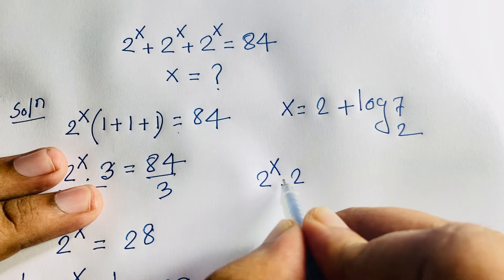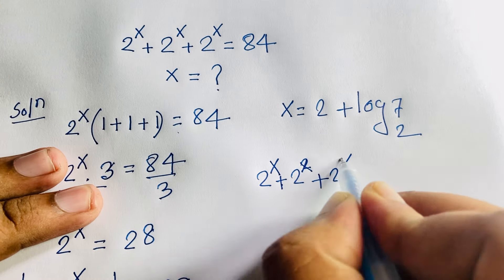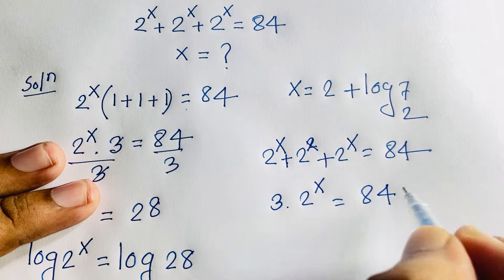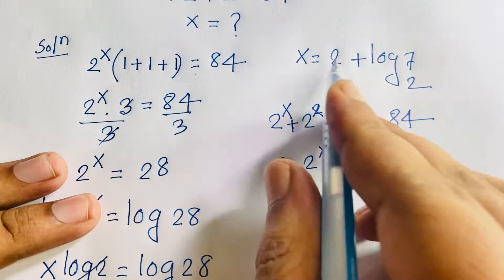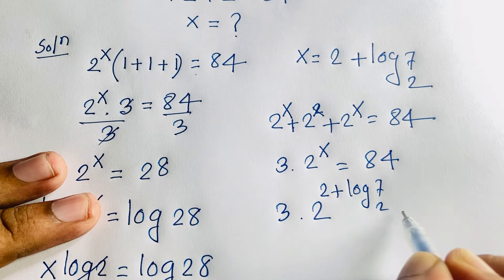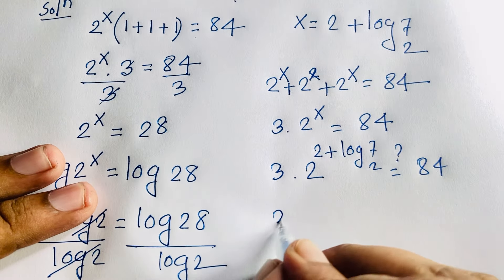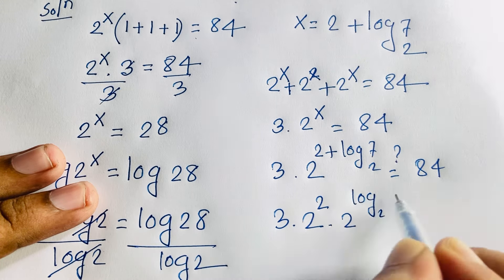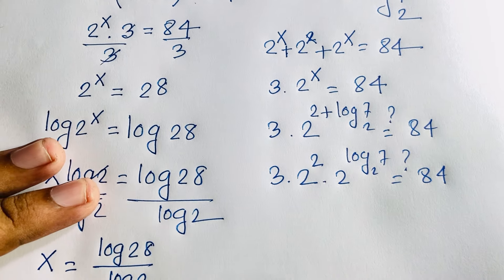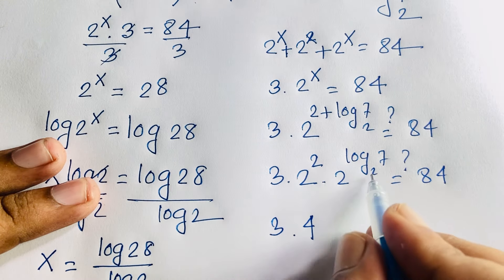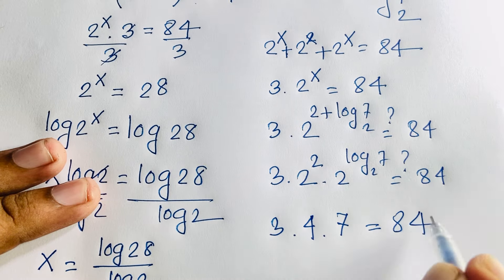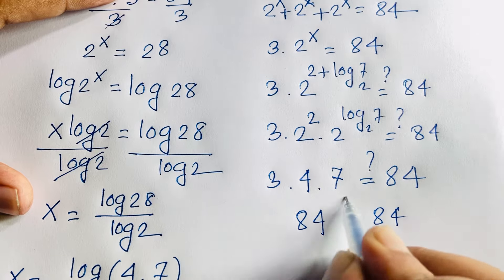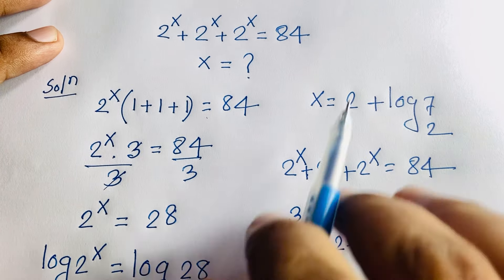Let's verify: our equation is 2^x + 2^x + 2^x = 84. With x = 2 + log₂7, we get 3 times 2^(2 + log₂7). Using exponential rules, this is 3 times 2² times 2^(log₂7), which equals 3 times 4 times 7. That gives 12 times 7 equals 84. Confirmed!